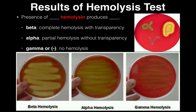Let's look conceptually at what's going on with the hemolysis, then we'll look at a flow chart for more specifics. After you inoculate the bacteria on the blood agar and incubate it, there's a possibility that some of those red blood cells will be degraded away because they've been lysed. In the area where hemolysis is taking place, you will not see the red.